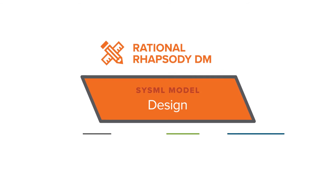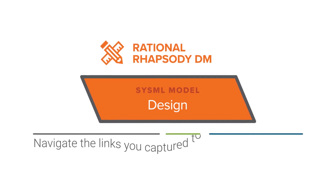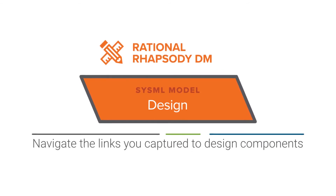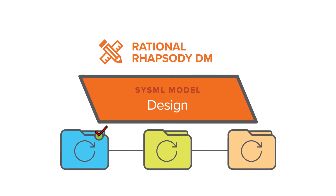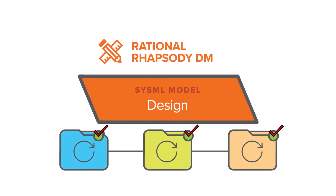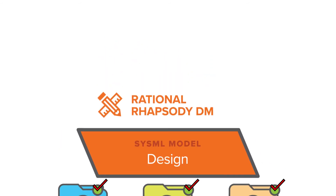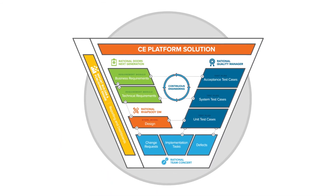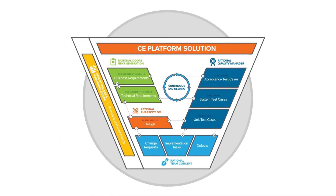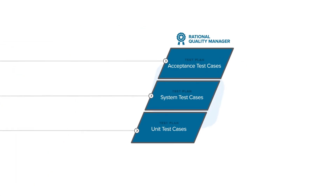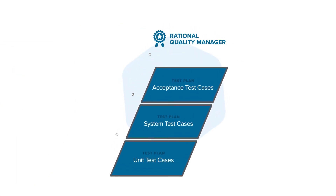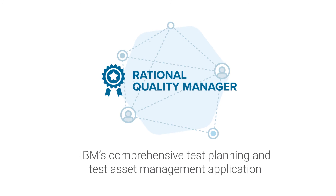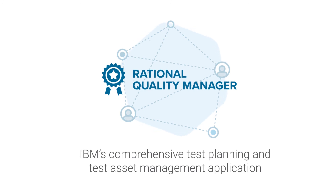System architects and your organization navigate the links you captured to design components in Rhapsody Design Manager. These links determine how those design components are affected, adding new links and design changes as needed. Similarly, your test managers will determine how acceptance tests are affected by tracing links to test cases in Rational Quality Manager, IBM's comprehensive test planning and test asset management application.